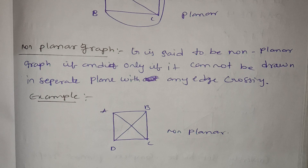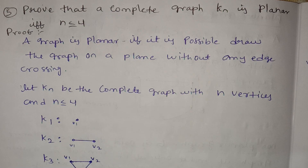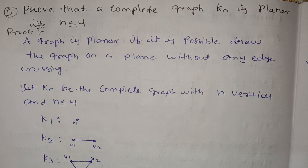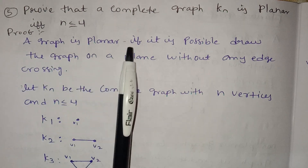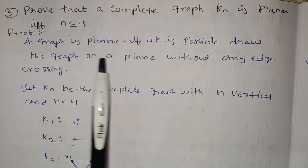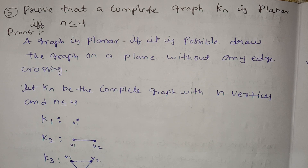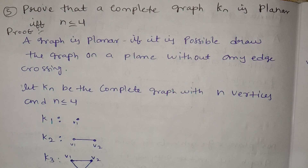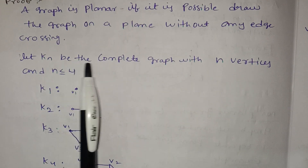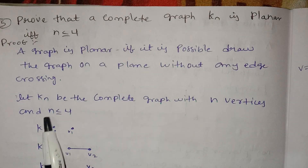To complete graph — to planar and non-planar — we can prove Kn is planar if n is less than or equal to 4. Let Kn be the complete graph with N vertices, N less than or equal to 4.